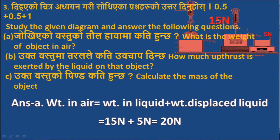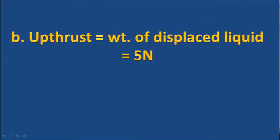Answer A: Weight in air equals weight in liquid plus weight of displaced liquid. Weight in liquid is 5N, weight of displaced liquid is 1N, so the total weight of the object in air is 20N. For B: thrust equals weight of displaced liquid, which is 5N.